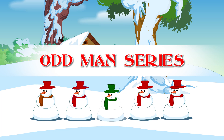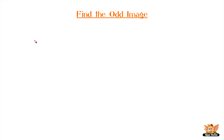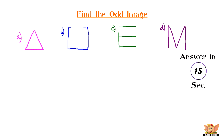Odd man series. In this odd man series, find the odd image. Here are the images: A, a triangle; B, a square; C and E; and D, letter M. Your time starts now. Good luck.